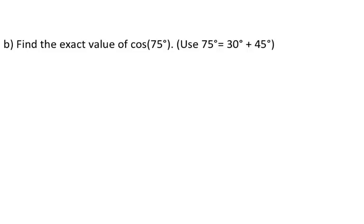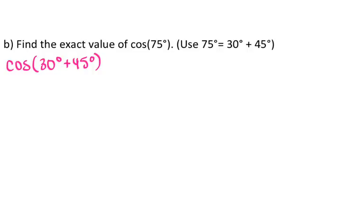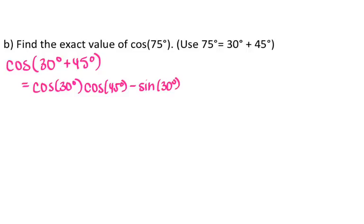To find the exact value of cosine of 75 degrees, we're using the fact that 75 degrees equals 30 degrees plus 45 degrees. So I can write this as cosine of 30 degrees plus 45 degrees. Looking at my formula sheet, it is the sum because I'm adding — cosine of u plus v. So that's cosine of 30 times cosine of 45, minus sine of my first angle times sine of my second angle, which is sine of 45. I'm just copying the formula exactly and putting the angles in the right spots.